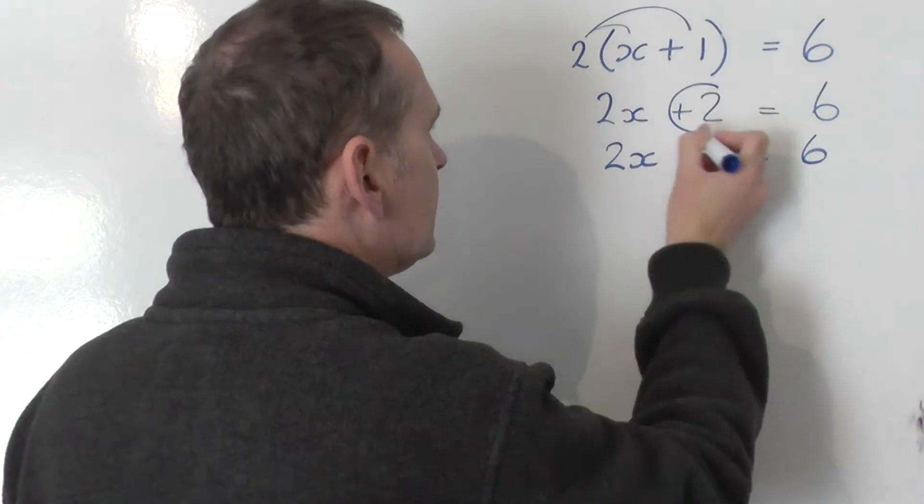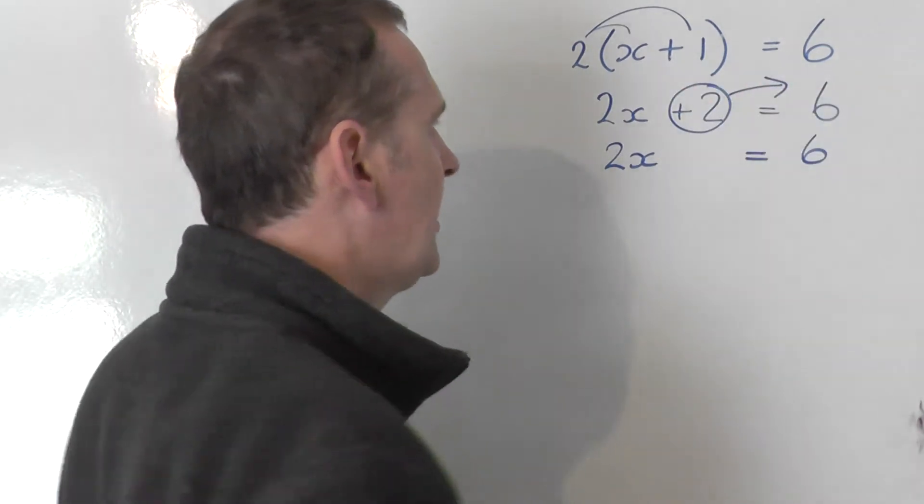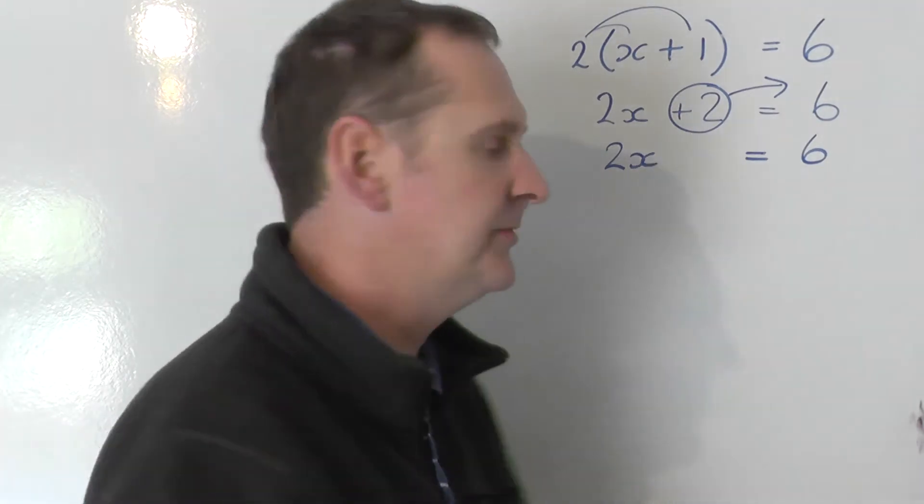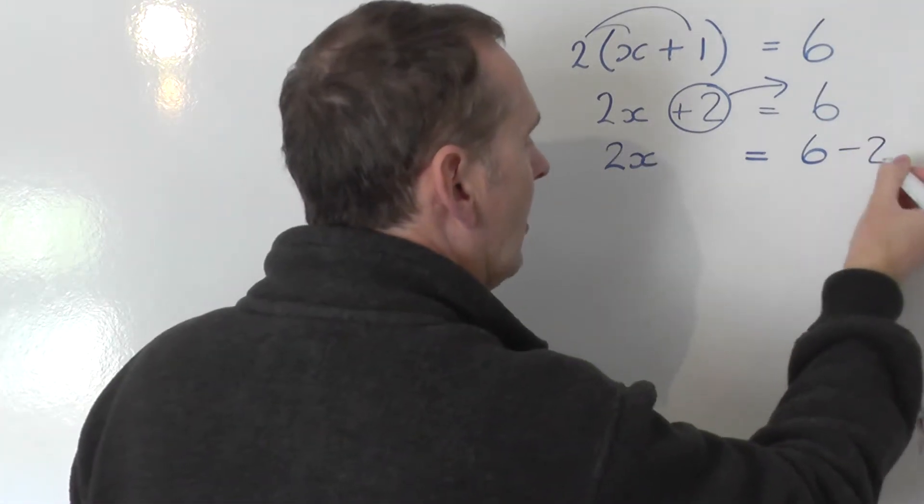Now the plus 2 is on the wrong side, so I'll drag that plus 2 to the other side. It swaps sides, so it swaps signs. So the plus 2 becomes a minus 2 on the right-hand side.